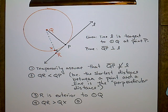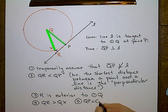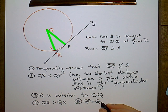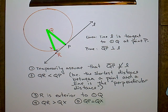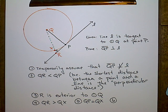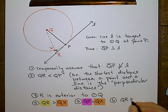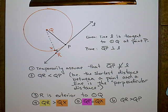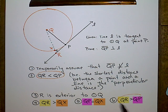And QR must be greater than QX, because X is between Q and R. Now, QX is a radius and QP is a radius, and all radii of a circle are congruent, so QP must equal QX. Well, if QX is less than QR, and QX equals QP, then through substitution, QP is less than QR — or in other words, QR must be greater than QP.